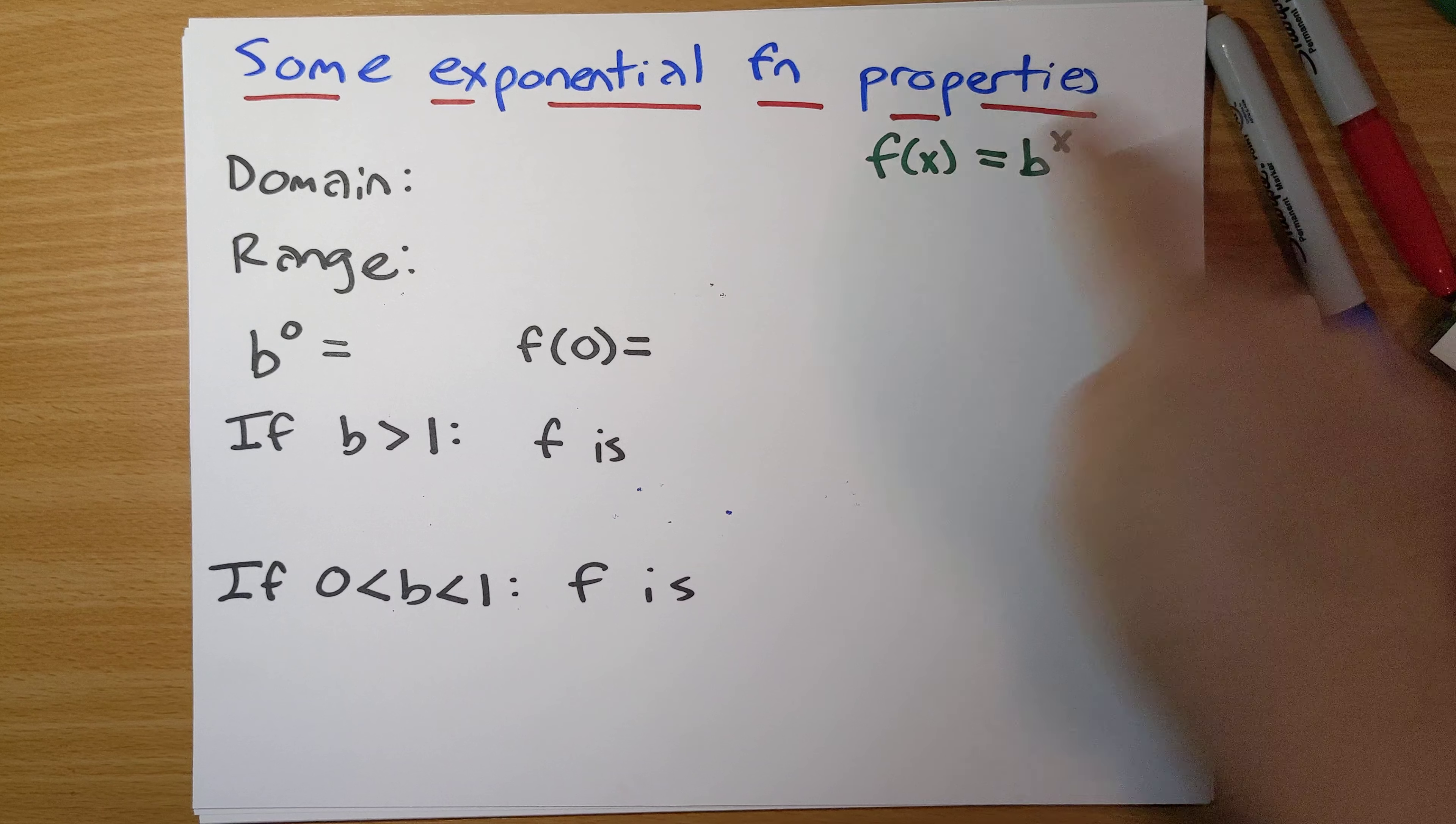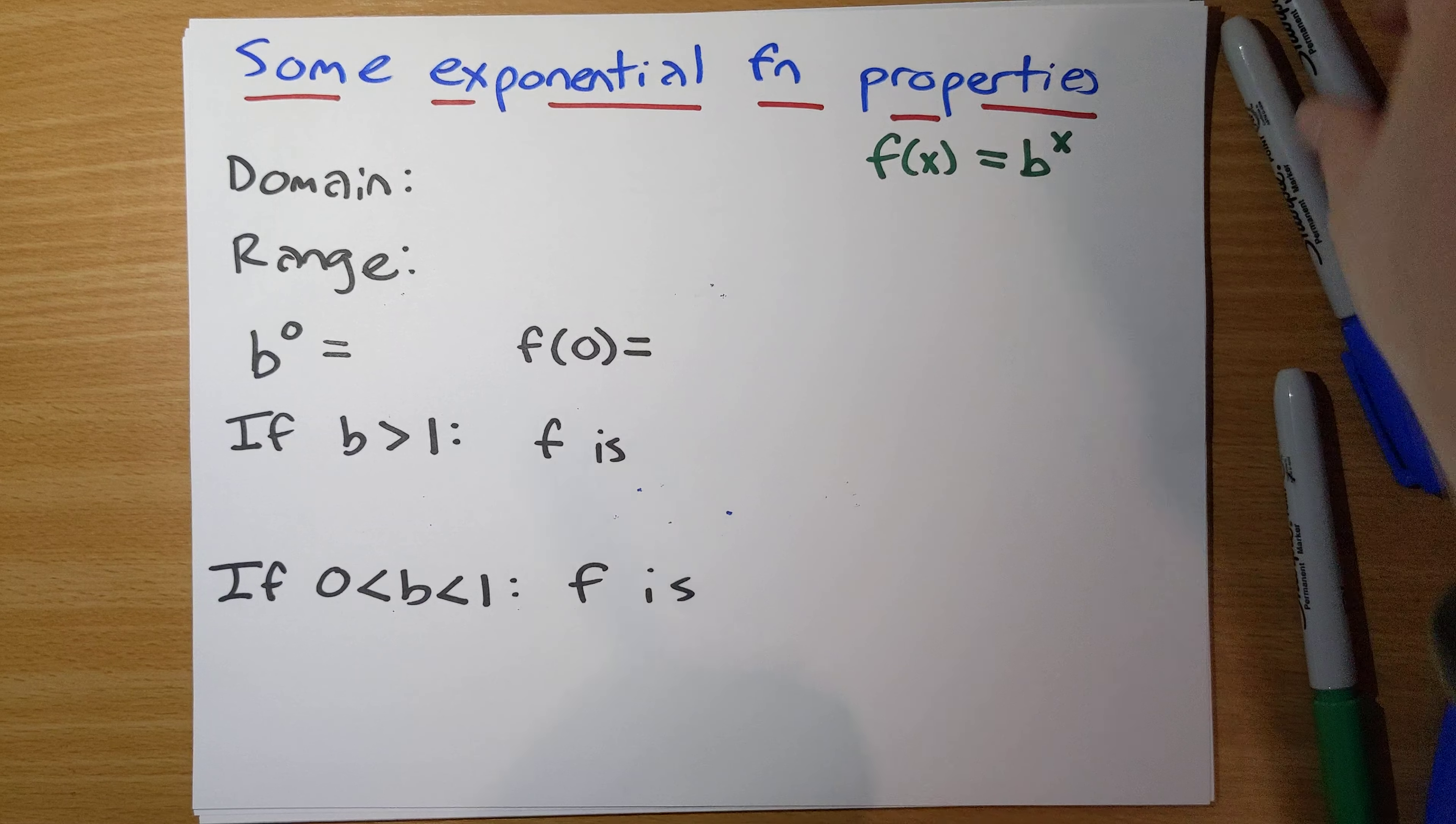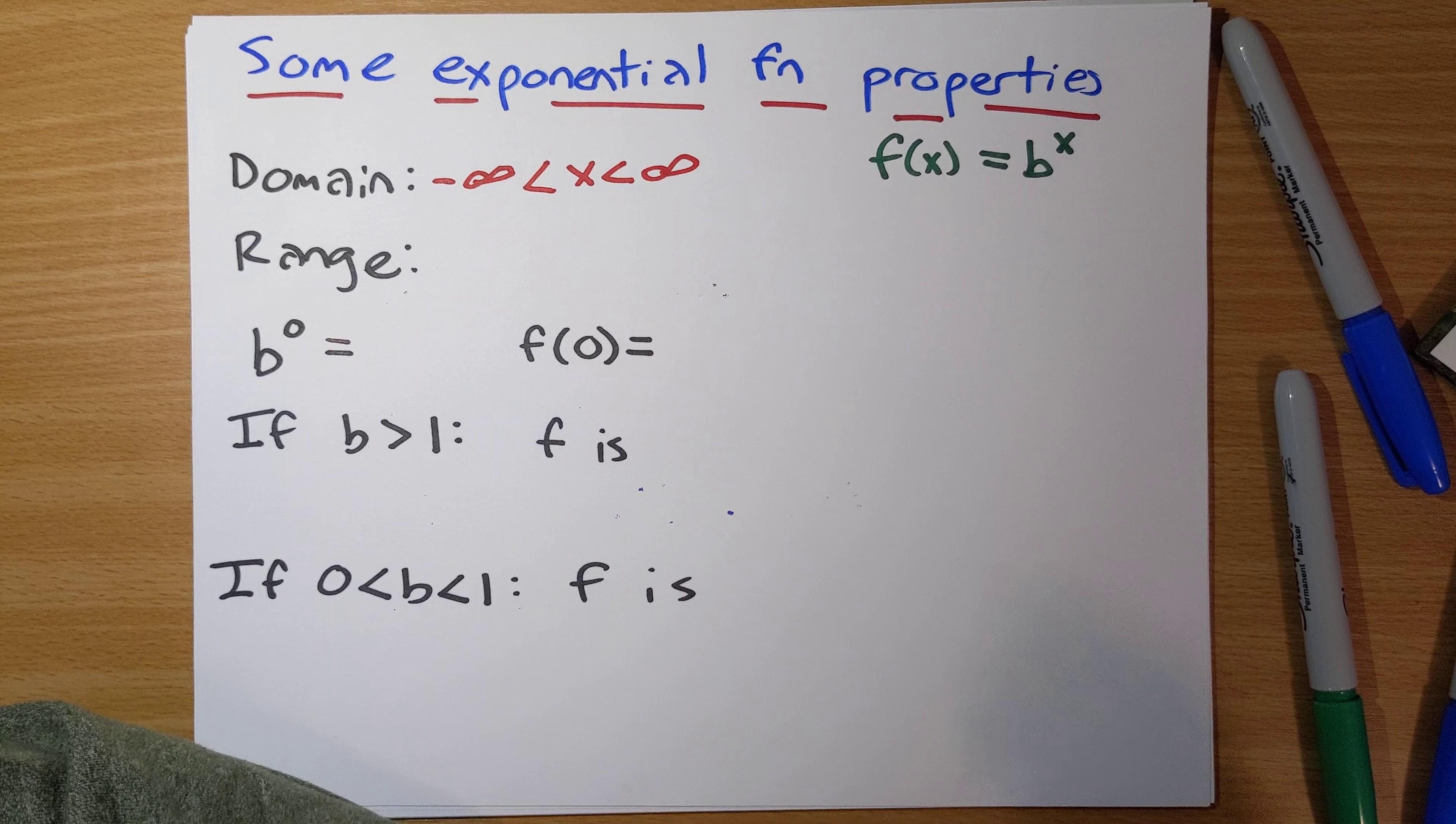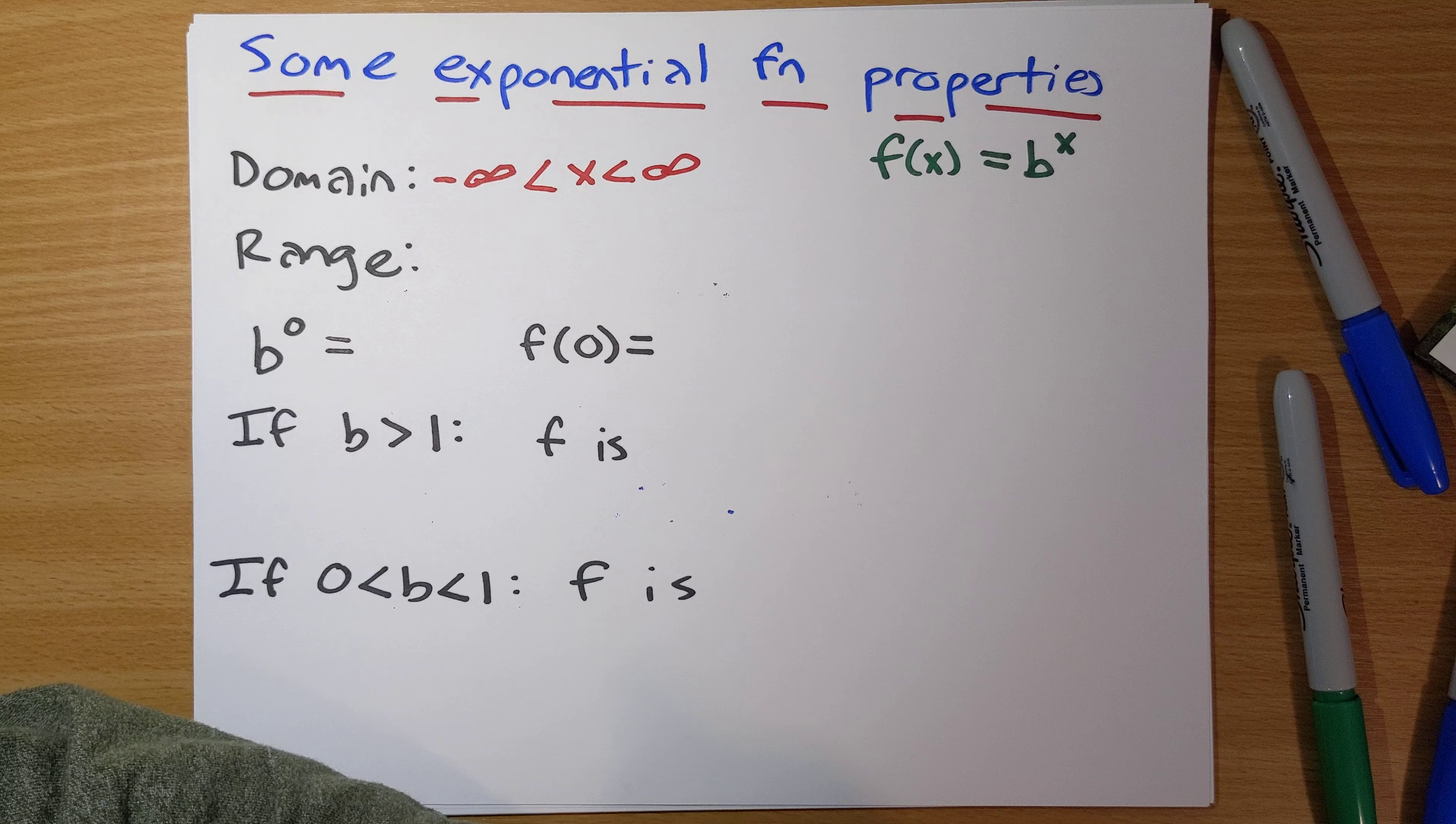Let's do some properties here. Again, with f of x is b to the x, assuming b is positive, not equal to 1. The domain of our exponential function is all real numbers, all x between negative infinity and positive infinity. This is because we're allowed to plug in any number that we want to. B to the x is going to be defined for all real numbers.